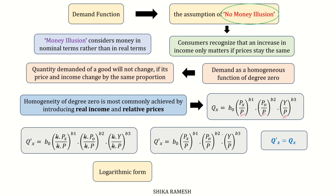A convenient way to express a constant elasticity demand curve is to take its logarithm: log q = log a + ε · log p. In this expression, the logarithm of q depends linearly on the logarithm of p, meaning a one-percentage change in price always leads to the same percentage change in quantity demanded, which makes the analysis straightforward.